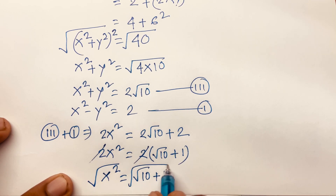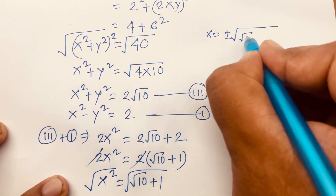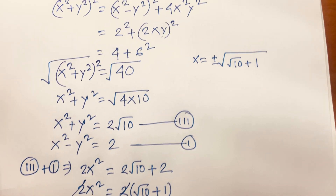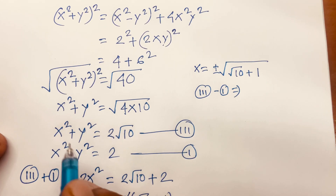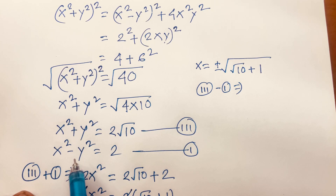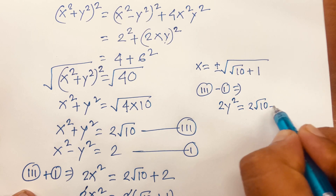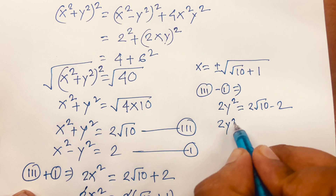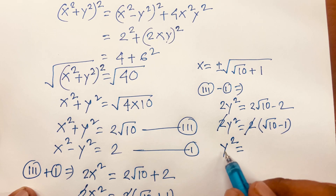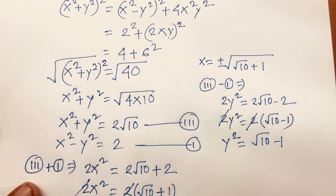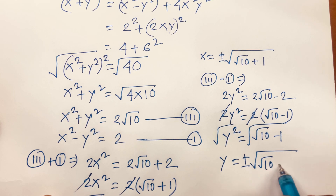Taking the square root, x = ±√(√10 + 1). Now subtracting the first equation from the third: (x² + y²) - (x² - y²) = 2√10 - 2, giving 2y² = 2(√10 - 1), so y² = √10 - 1, and y = ±√(√10 - 1).